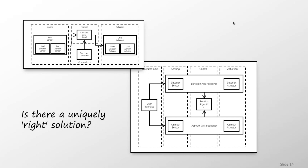Some engineers will say go with the cheapest one — ignore all the intrinsic quality issues and just deliver the cheapest solution. But even that is difficult to determine. What we really want is to pick the design that is not only correct but has the highest intrinsic quality. We need some qualitative language to say that one design is more intrinsically higher quality than the other.